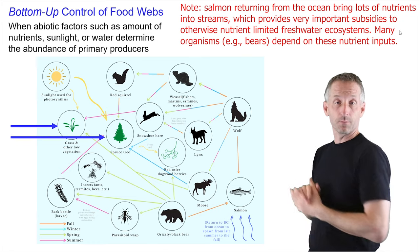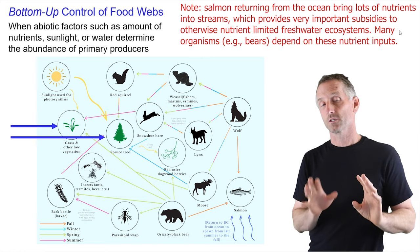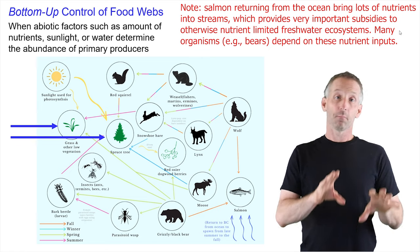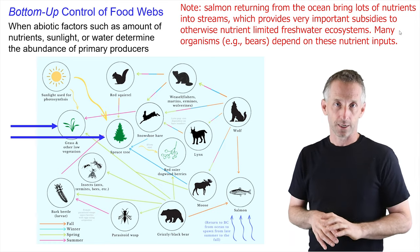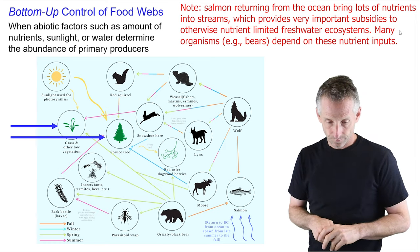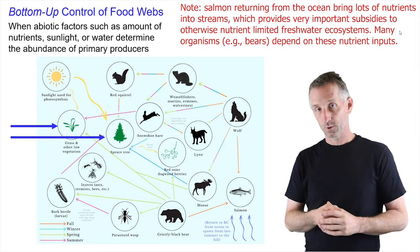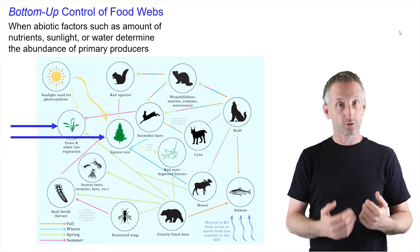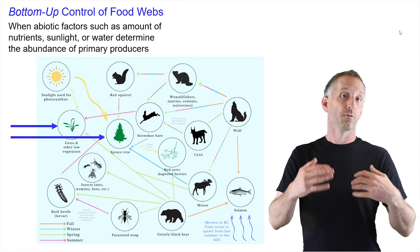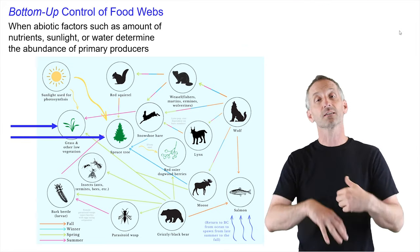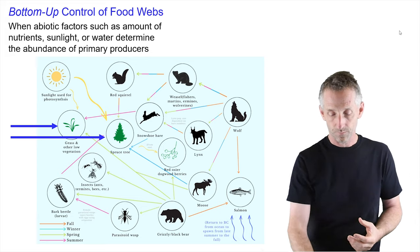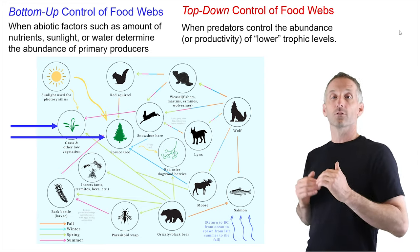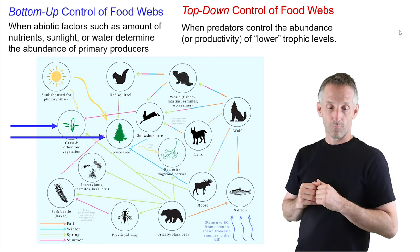But in other food webs, or in other components of this food web, you can have other controls on the flow of nutrients and energy through the system and therefore the entire food web structure. For example, you can have top-down control of food webs.